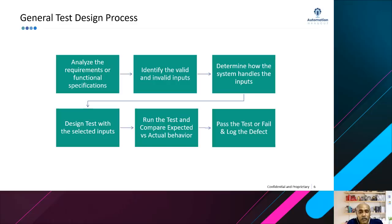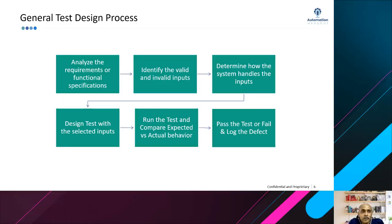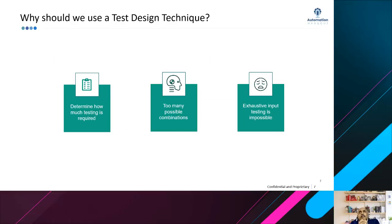Once your tests are designed, you run them and verify the expected versus actual behavior during execution. If they do not match, you fail the test and log the defect. If expected and actual behaviors match, you pass the test. The key message is that it is very important to identify valid and invalid inputs and know how the system deals with each — what outcome or output appears on the screen or web page, or the status of a job. You need to be very clear on how the system handles input based on whether it is valid or invalid.